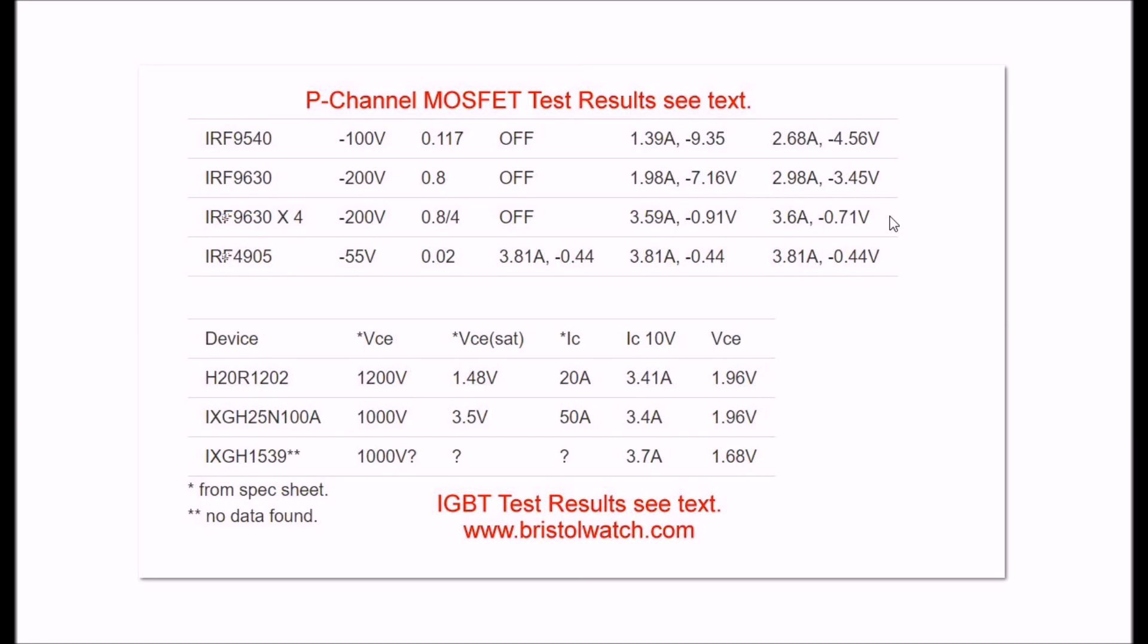Now I have another device. This is the IRF 4905. It's only rated for 55 volts. It has 0.02 ohms RDS. At 3.3 volts it was virtually all the way on. Great. 3.81 amps at 3.3 volts at a resistance of 0.44 ohms.